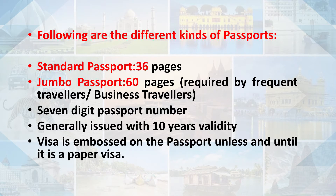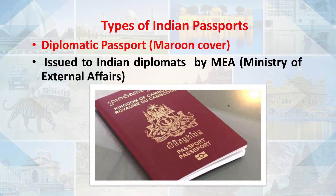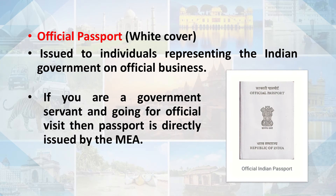The visa is embossed on the passport. There are different types of passports: the regular passport, which is navy blue in colour for ordinary citizens issued for vacations and business trips; the diplomatic passport, which is maroon in colour, issued to Indian diplomats by the Ministry of External Affairs; and the official passport, which is white in colour, issued to individuals representing the Indian government on official business.